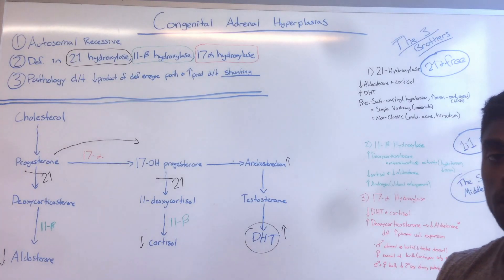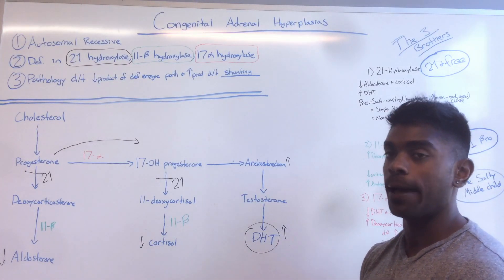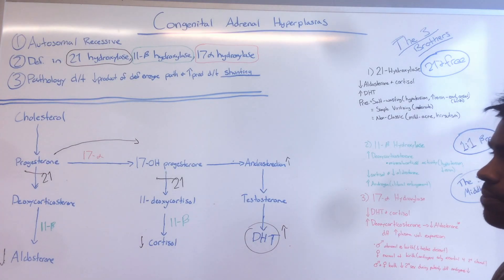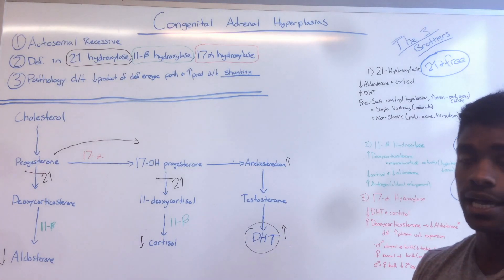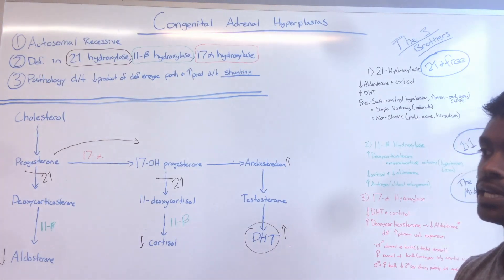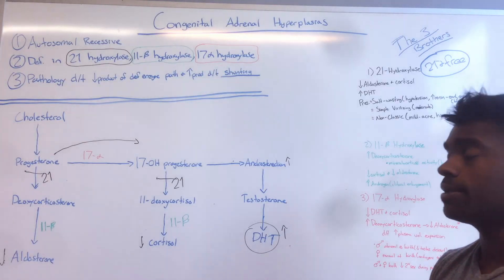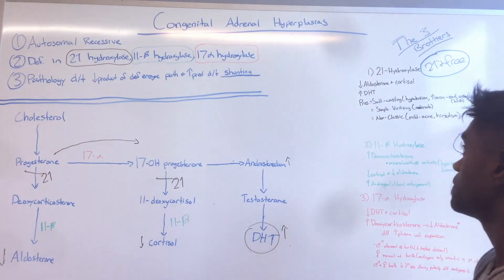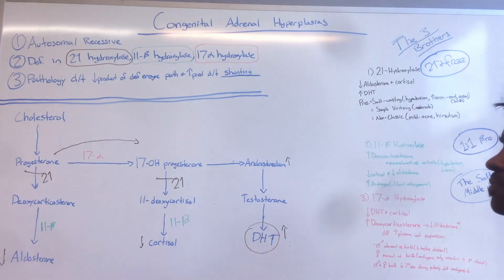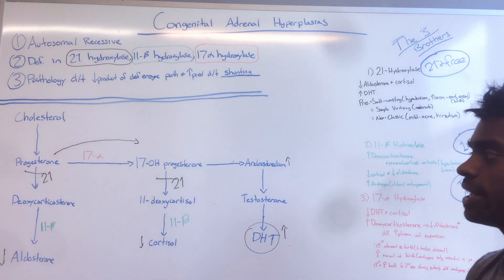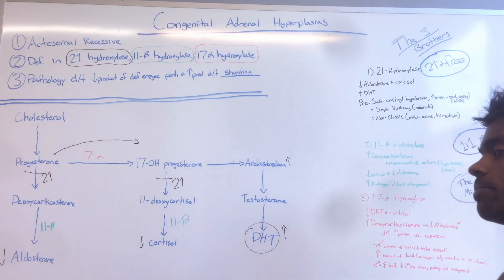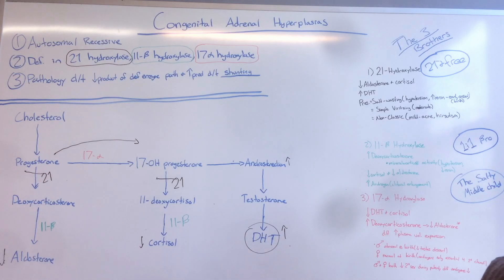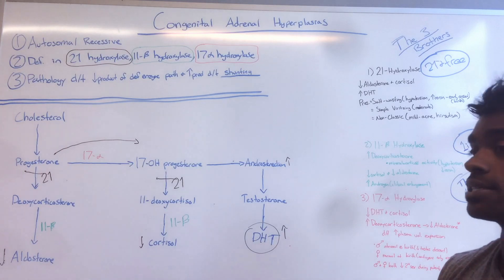There are three different presentations that can occur. The most severe form is the salt-wasting form that can be seen at birth, and some of the symptoms include hypotension — and as a result of hypotension, there's going to be an increase in renin. The second form is a more moderate form called the simple virilizing form. And lastly, the most mild form — meaning there's still enough enzyme present — is going to present as some acne and hirsutism, and that's called the non-classical form.